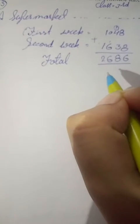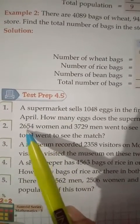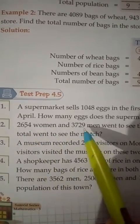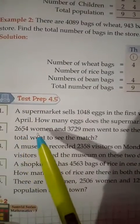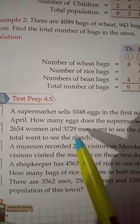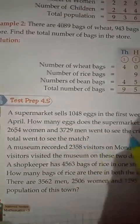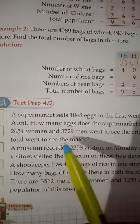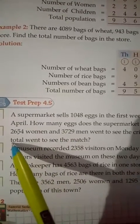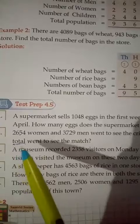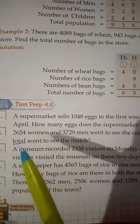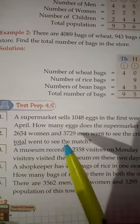Complete Question 1. Next, read out Question 2. Two thousand six hundred and fifty-four women and three thousand seven hundred and twenty-nine men went to see the cricket match. How many people in total went to see the match? Total means addition, so we add the numbers.